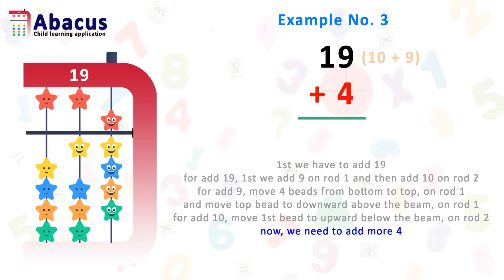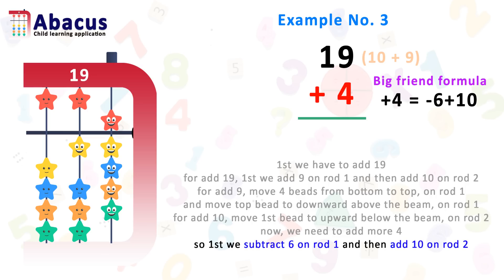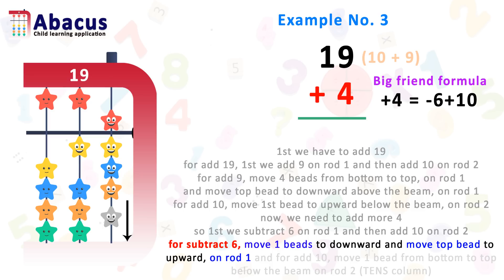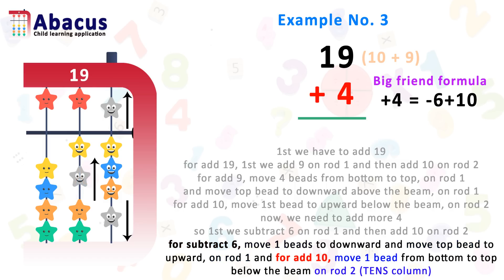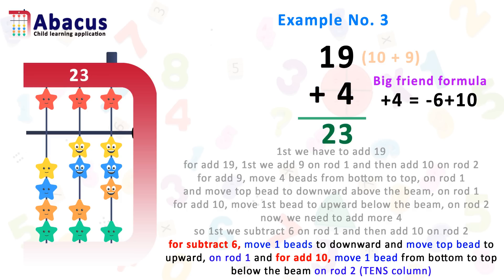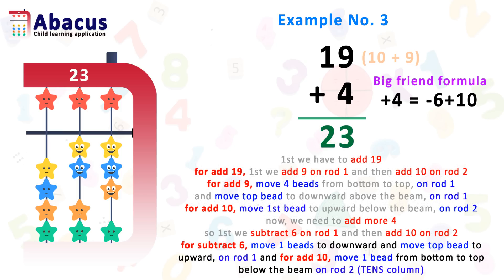We have to use the big friend formula for adding plus 4. Big friend formula of plus 4 is minus 6 plus 10. So first we subtract 6 on rod 1 and then add 10 on rod 2. For subtracting 6, first move 1 bead downward, and then move the top bead upward on rod 1. For add 10, move 1 bead from bottom to top below the beam on rod 2. The answer is 23. First we added 19 by adding 9 on rod 1 and 10 on rod 2, then for add 4 we used big friend formula: plus 4 equals minus 6 plus 10.